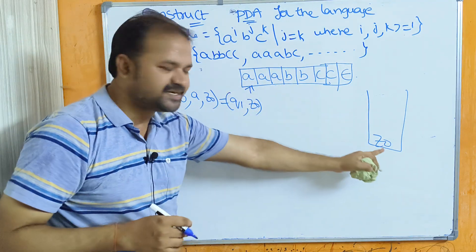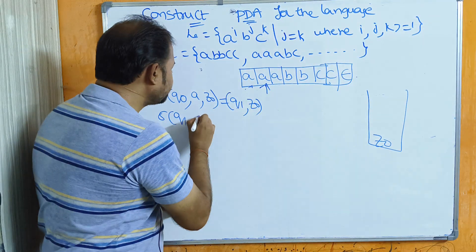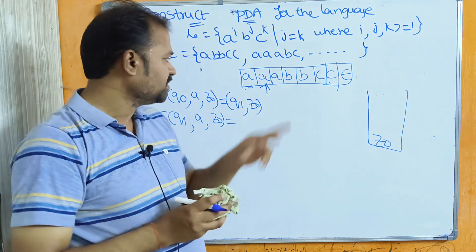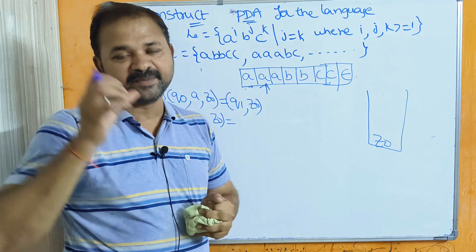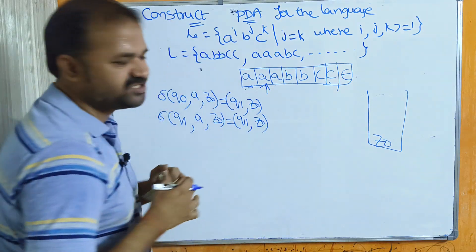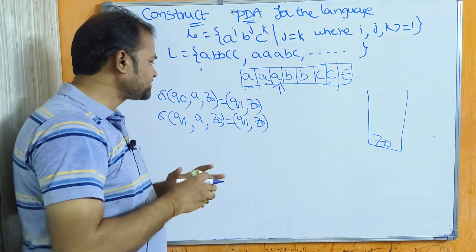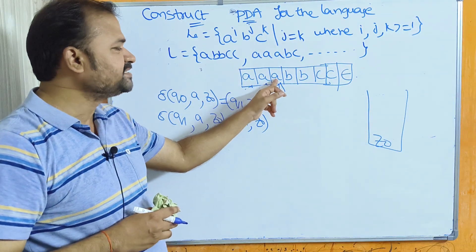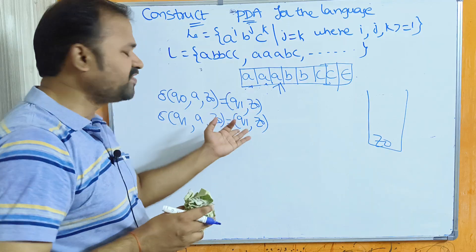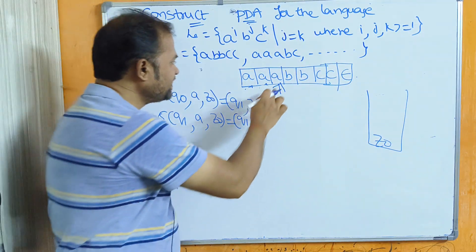Now the input symbol is a and we are at q1, so delta(q1, a, z0) stays at q1 with the stack unchanged. For subsequent a's there is no need to change state — this transition function is already written, so no need to write it again. Now the read head points to b, so delta(q1, b, z0) is next.